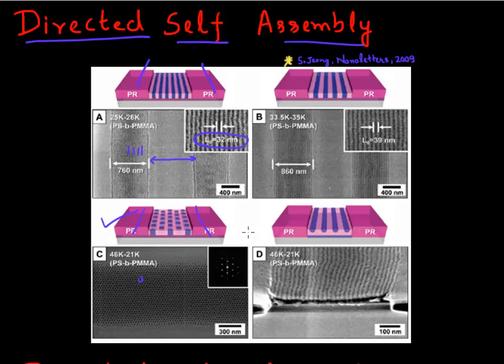And again, the main challenge here is defects. So you want to print millions of these features without any of these polymer collapsing or any of these defects occurring.